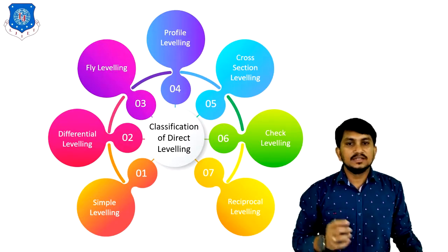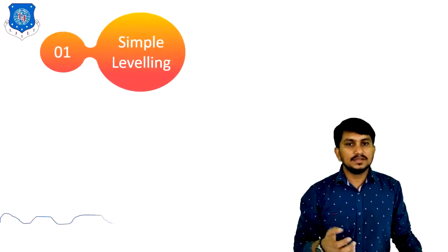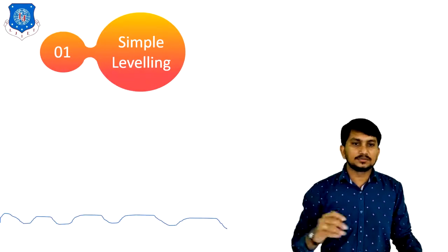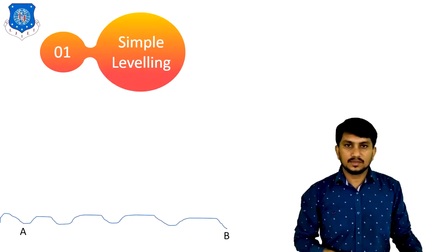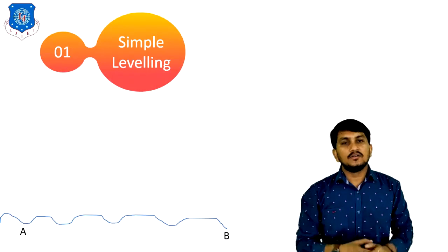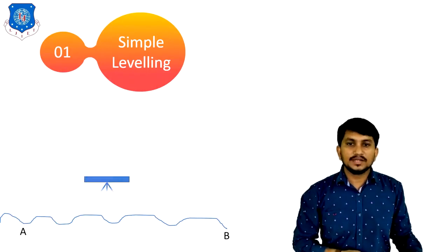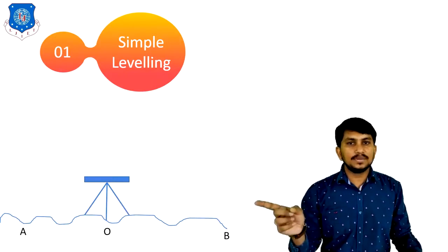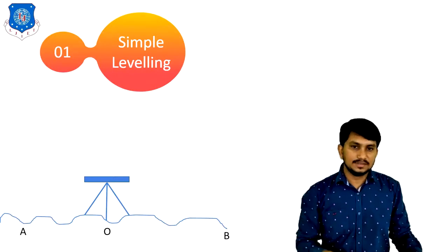Let's start with simple leveling. So what is simple leveling? We will understand by this figure. Suppose there is uneven ground; we will take two points on this uneven ground and our goal is to find out the level difference between these two points. For that, we have to do a setup of dumpy level in between these two points, like this.